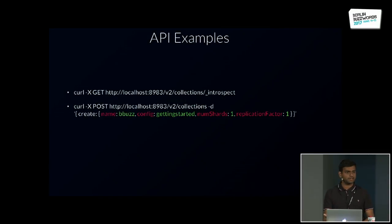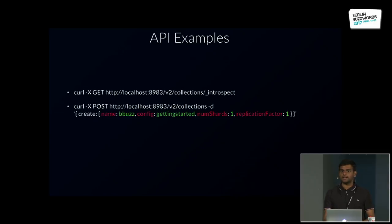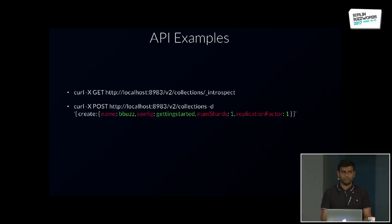Here's an example of the v2 API. You have your endpoint at slash v2, then you specify collections because you want to know what collection APIs are available, and you say introspect. This gives out all the collection APIs, their parameters, and describes how to use them — very self-describing APIs. If you're interested in more about these v2 APIs, there's a talk later today specifically on it. Here's how you would create a collection with v2: you say create, give it a name, a config, and num_shards. The parameters stay the same but it's JSON-structured and more self-describing.